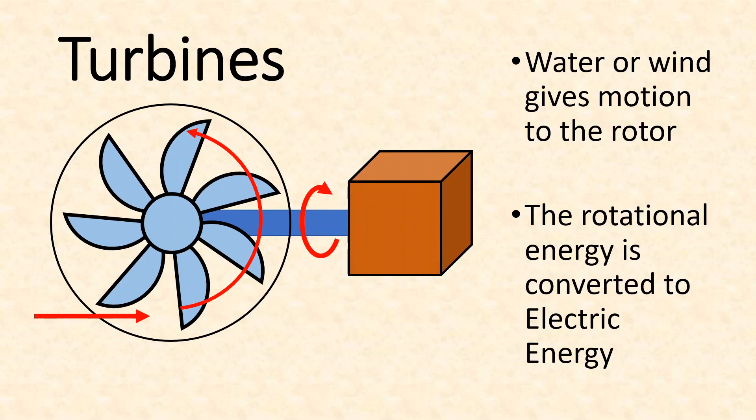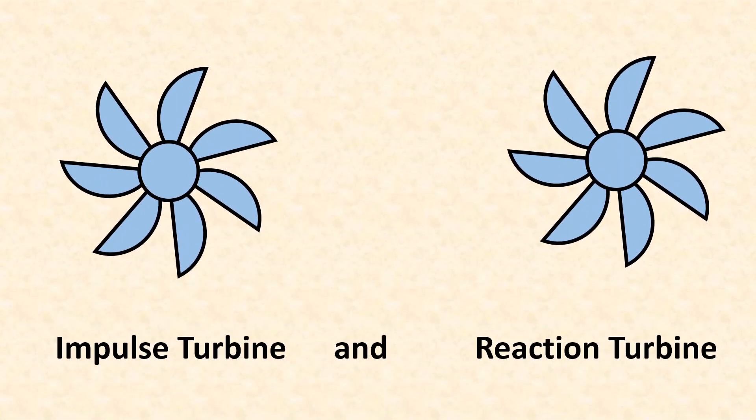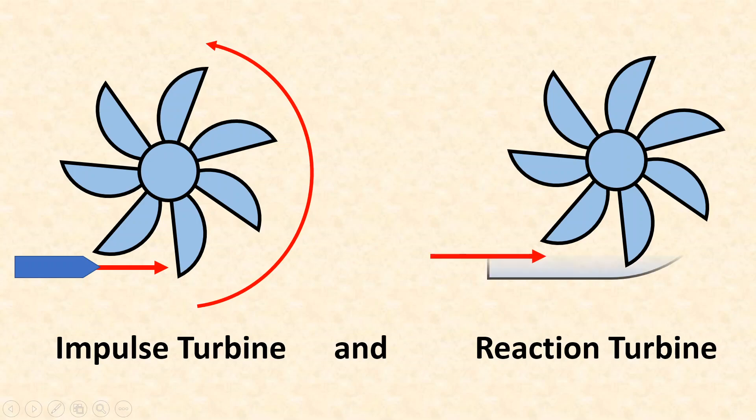What happens is we try to rotate this kind of a setup, a runner, with moving water or moving wind or moving vapor and it rotates. This is connected to a shaft, so this shaft is connected to a generator or dynamo, and this dynamo generates electricity. Turbines may be of different types.